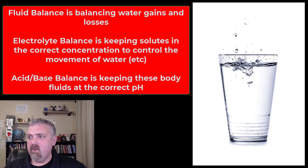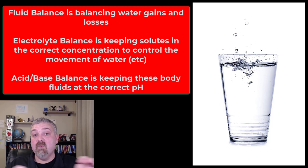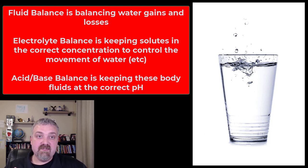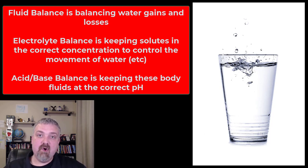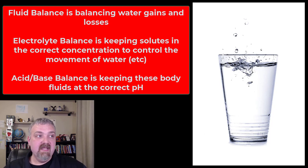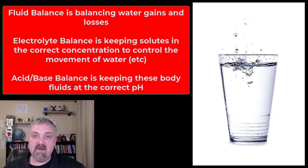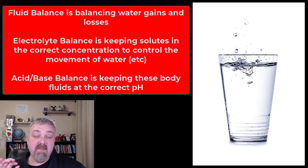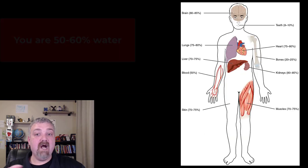We'll talk about electrolyte balance primarily in terms of the role it plays with where your body fluid is. We really can't boss water around — water moves by osmosis, so we have to change where solutes are and water will follow. So fluid balance is important, electrolyte balance determines where that fluid is, and none of this matters if we can't maintain a normal pH. Your blood pH is normally 7.35 to 7.45. If your pH gets too low or too high, proteins denature, your cells fall apart, and you die. So the pH of these fluids matters a great deal, which is why we'll cover acid-base balance as well.